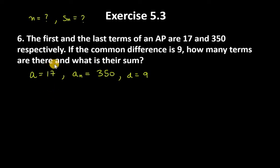Hello everyone, let's start with question number 6. It says the first and last term of an AP are 17 and 350 respectively. If the common difference is 9, how many terms are there and what is their sum?